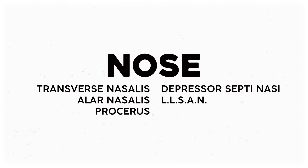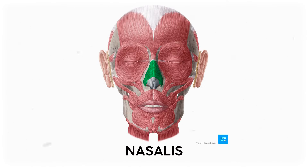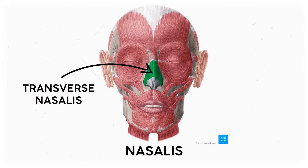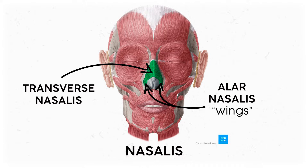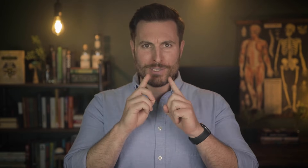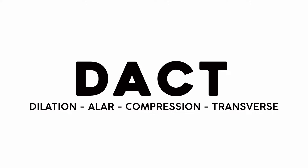Next up, the nose muscles. They mostly share one Latin root: nasal. The most prominent are the two muscles that control the nostrils — the transverse nasalis and the alar nasalis. The transverse portion spans the entire width of the nose, traversing edge to edge, while alar means wings, and the alar nasalis is tucked on the edges of the nose like little wings. There are really only two things we can do with our nostrils: dilate or compress them. The alar nasalis dilates while the transverse compresses — use the acronym DACT: Dilation, Alar, Compression, Transverse.